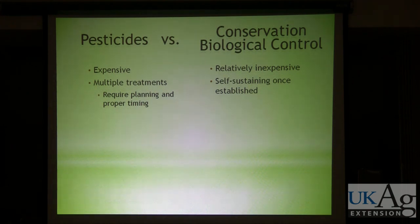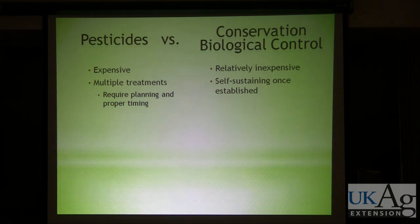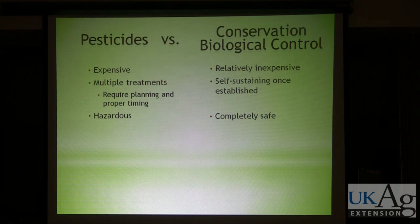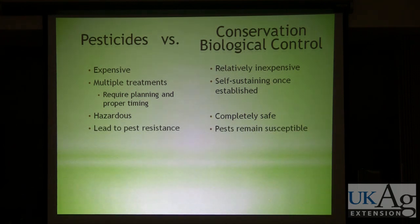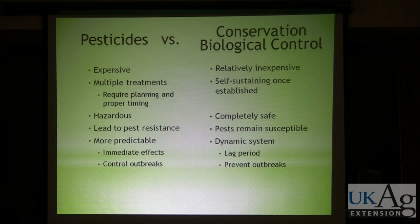With pesticides, there may be multiple treatments required, and there's a lot of planning involved if you need to apply them during a precise time when the pest is most vulnerable. With natural enemies, they figure that out for you — they know when the pest is vulnerable and are already adapted to know the timing, making it a fairly self-sustaining system once established. Pesticides can pose a hazard to you, your employees, and your customers, whereas biological control is completely safe. Pesticides can also lead to pest resistance, whereas pests will continue to remain susceptible to their natural enemies. Pesticides, however, are more predictable and give more immediate effects, and in some situations that is the best approach.